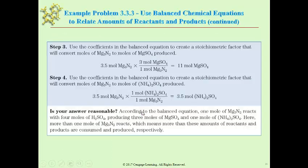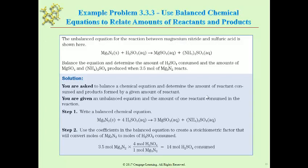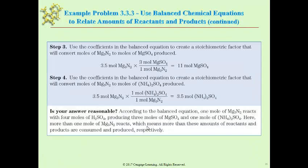Let's look at the example problems that the book has. In this case, we use the relationship between the moles of sulfuric acid and the moles of magnesium nitride from the balanced equation — this is where the four came from, and the one because there's nothing there means it's a one. To convert the 3.5 moles of magnesium nitride given in the problem to get the moles of sulfuric acid consumed, and then further converting to moles of magnesium sulfate produced, again using the mole-to-mole ratio, the 3 that was in front of magnesium sulfate.